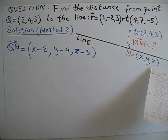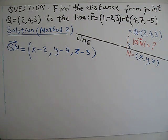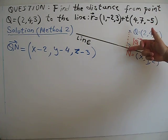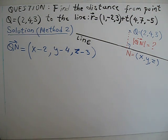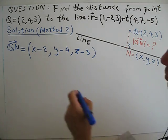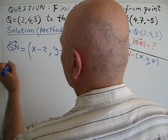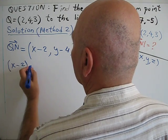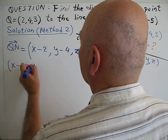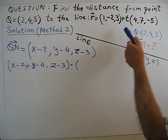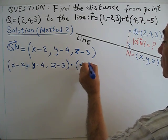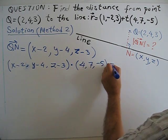So if I can find x, y, z, it will be very easy. First of all, QN is perpendicular to the line, because distance is always perpendicular. From the dot product, if two lines are perpendicular to each other, the dot product of these two lines will be zero. So based on this, I write: QN dot the direction vector. So (x minus 2, y minus 4, z minus 3) dotted with (4, 7, negative 5) equals zero.